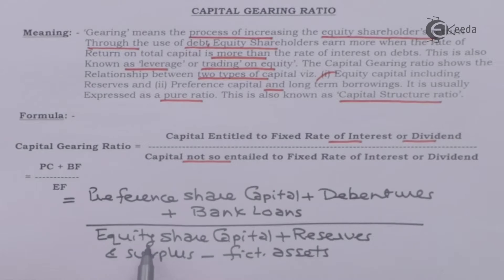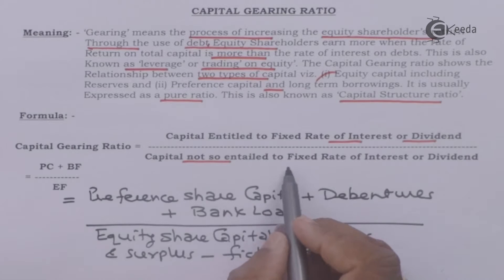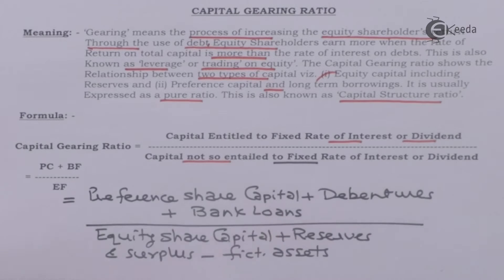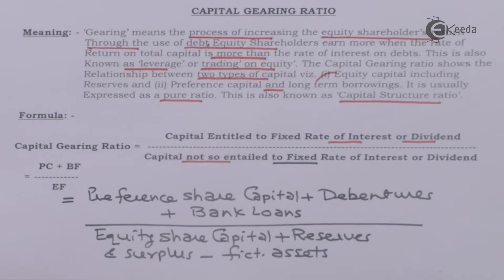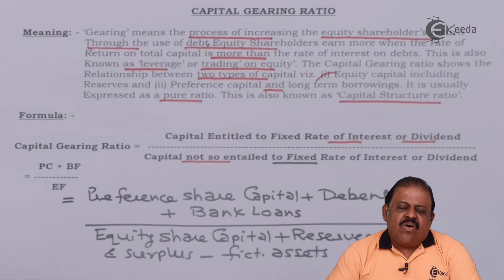The denominator is equity share capital plus reserves and surplus minus fictitious assets — this is essentially the equity shareholders' fund, where there is no fixed payment of dividend. By dividing we get a pure ratio. The standard capital gearing ratio is 1:1.